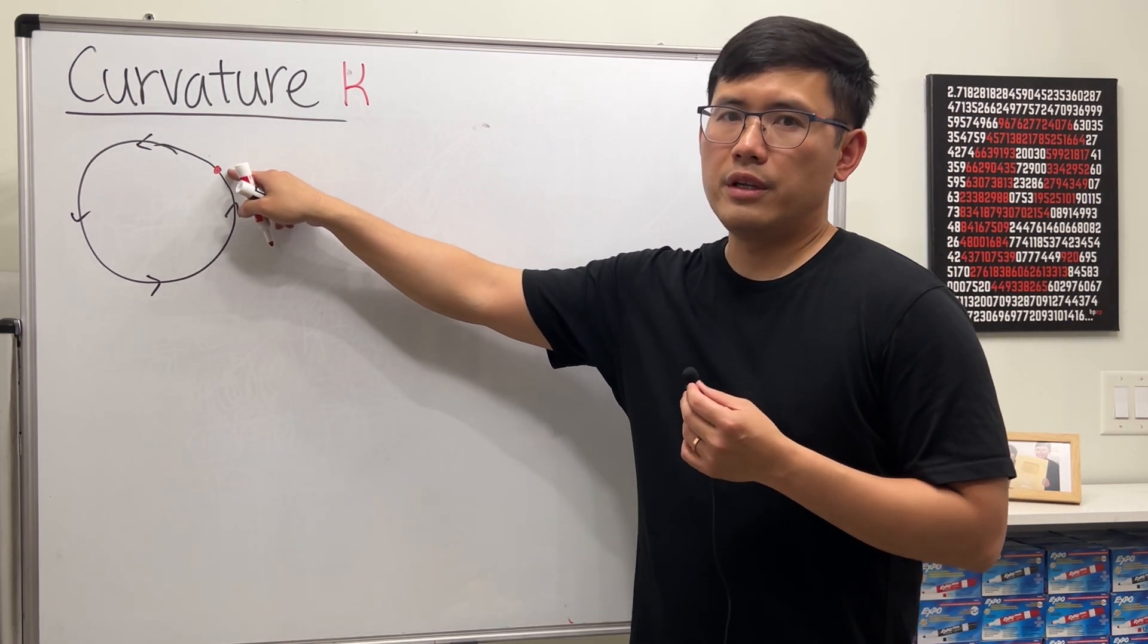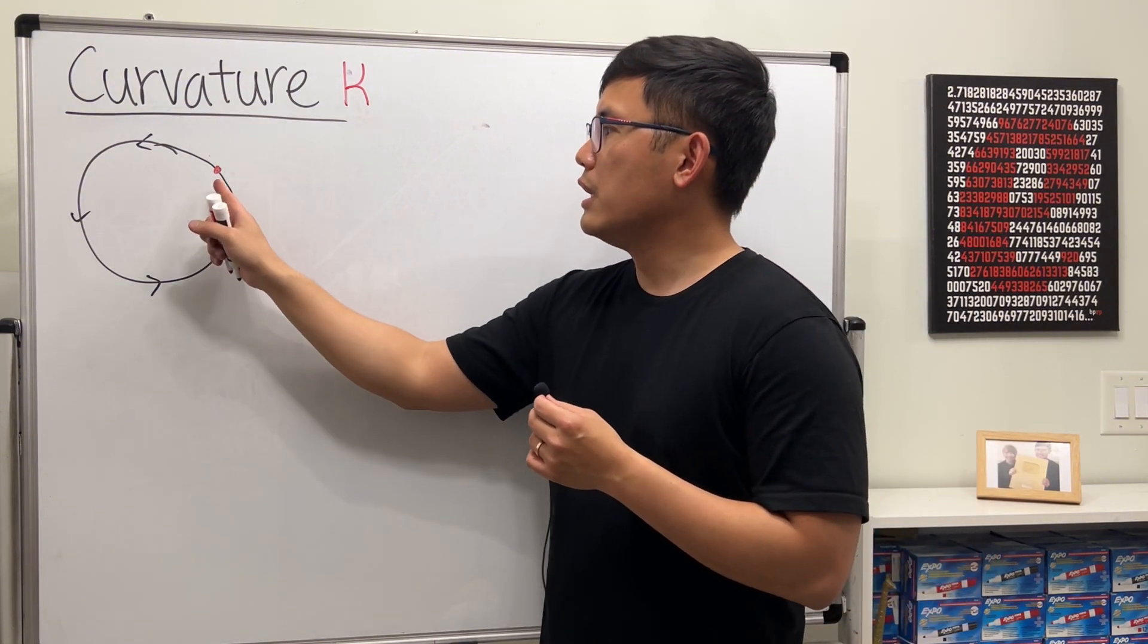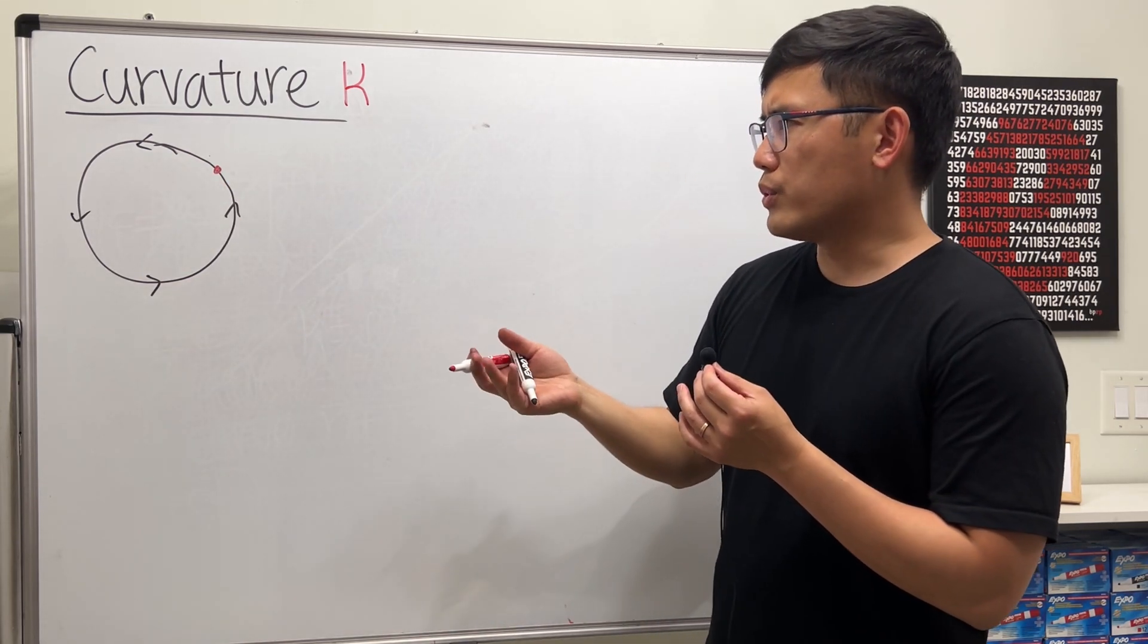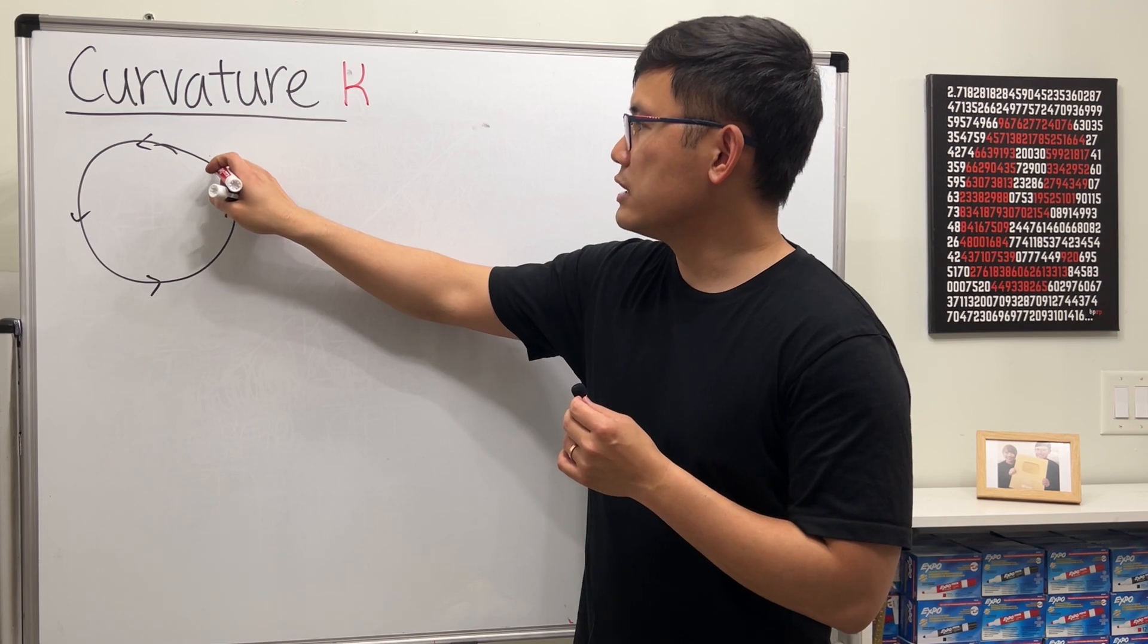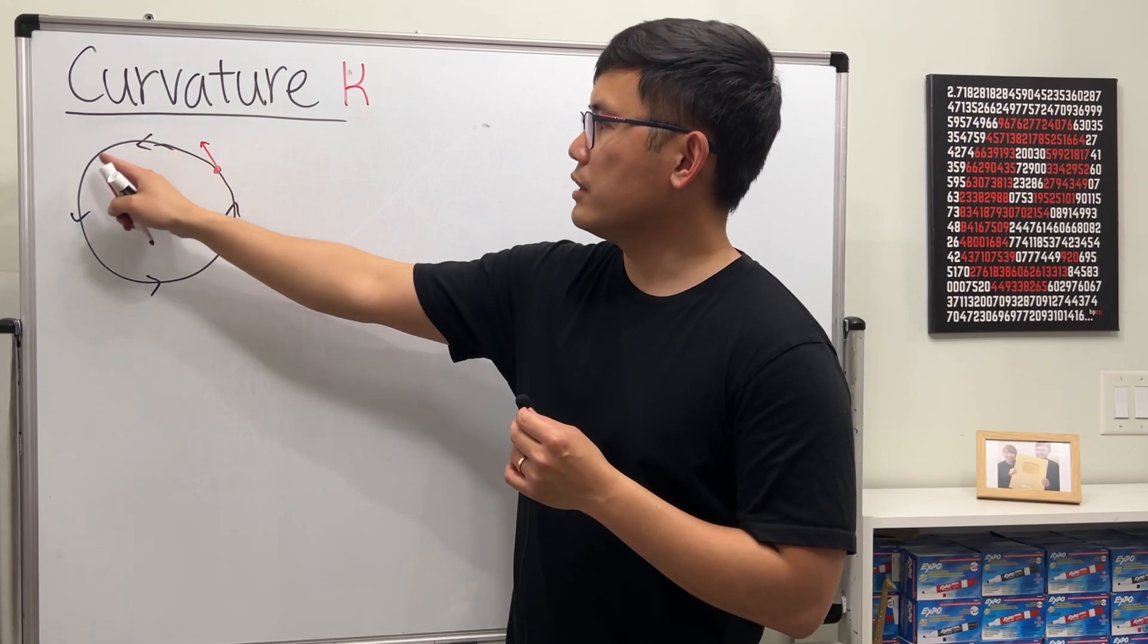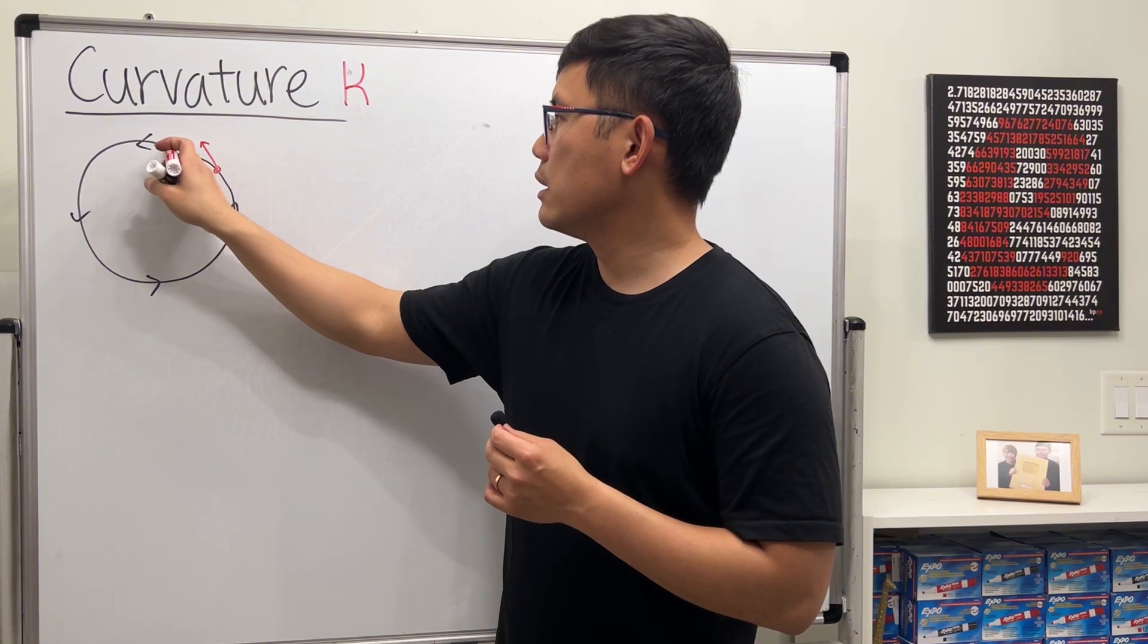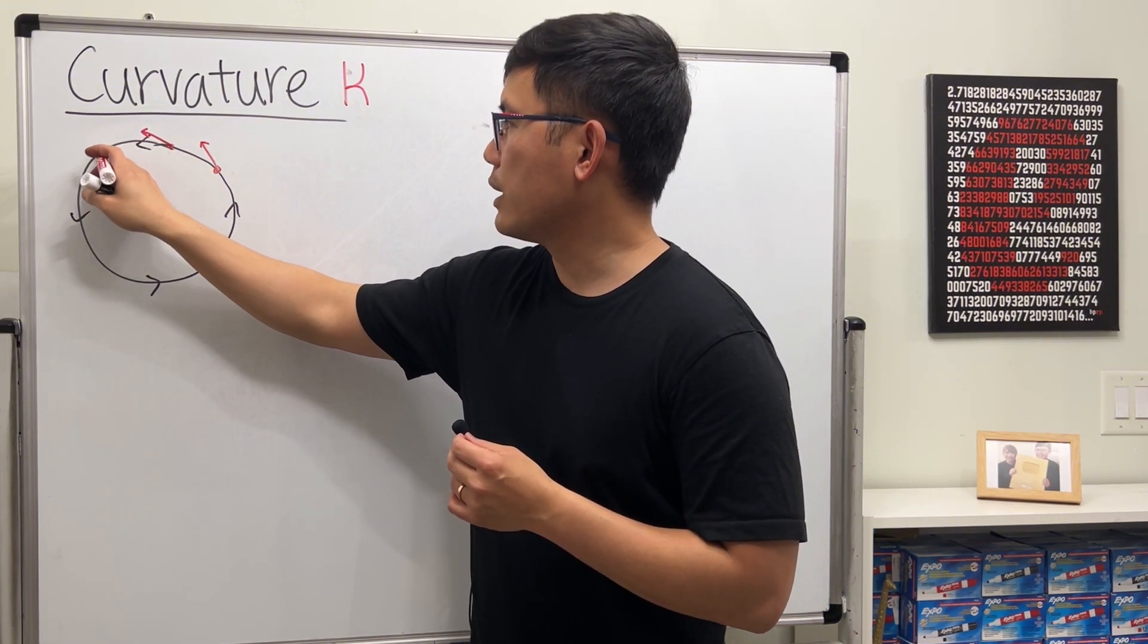The question is we'd like to know the curvature right here at this point. What does that mean? Intuitively, you can think about curvature as how much this is bending right here. To figure it out, we draw a small tangent segment. This is called the unit tangent vector, and I put the arrow in the same direction as how the circle is traveling.